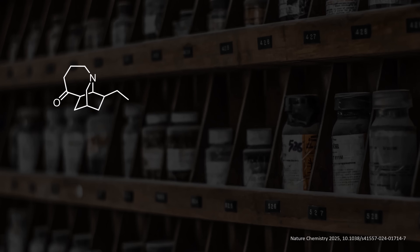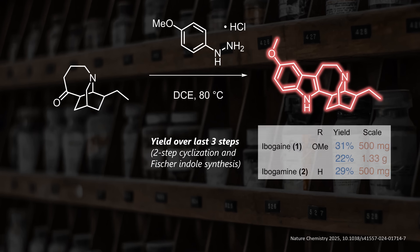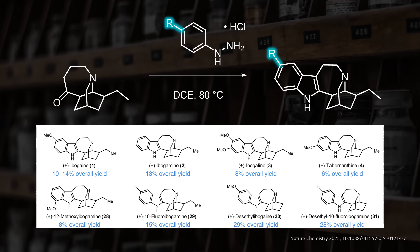To make up for previous challenges, the last step is simple: a standard Fischer indole synthesis, a reaction often employed to make Iboga and other alkaloids. This delivers racemic Ibogaine in just seven steps — the shortest approach yet. Unfortunately, yield drops by one third at 1.5-gram scale, so it's not amazingly scalable. A cool feature of the Fischer indole synthesis is that by changing the substitution of the aryl hydrazine, different analogs of Ibogaine can be accessed, and the researchers found something interesting here.